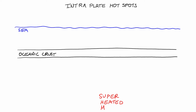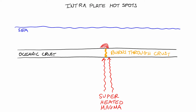What happens is you have a superheated area of magma, and the superheated area of magma will rise up, as you can see, and will burn a hole through the crust because of the fact that it's superheated. As it burns a hole through the crust, it starts to form a volcano, which can gradually build and eventually will form an island in the middle of the ocean.